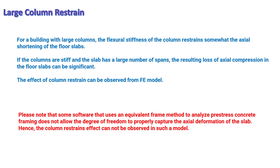For a building with large columns, the flexural stiffness of the column restrains somewhat the axial shortening of the floor slabs. If the columns are stiff and the slab has a large number of spans, the resulting loss of axial compression in the floor slabs can be significant. The effect of column restraint can be observed from the finite element model. Please note that some software using an equivalent frame method to analyze pre-stressed concrete framing does not allow the degree of freedom to properly capture the axial deformation of the slab, hence the column restraint effect cannot be observed in such a model.